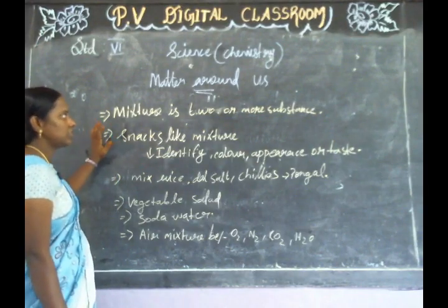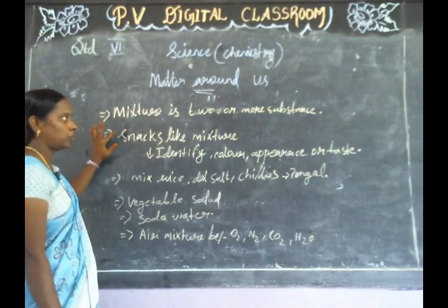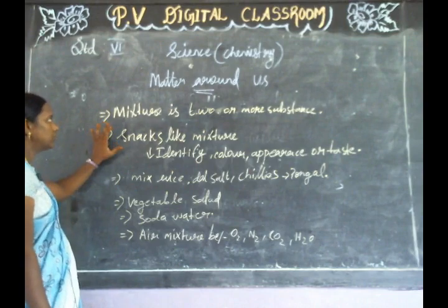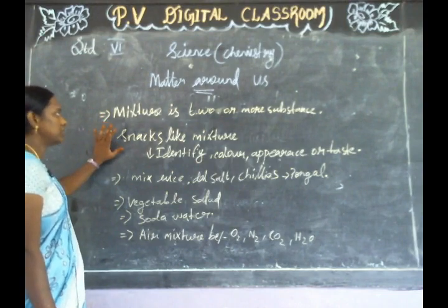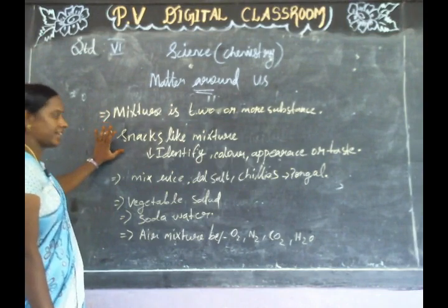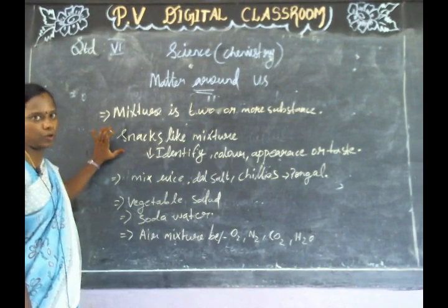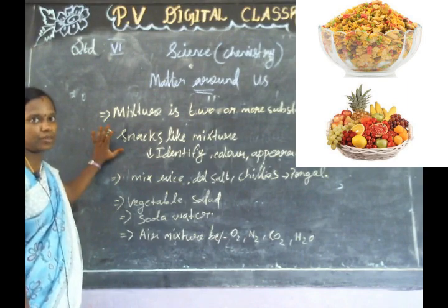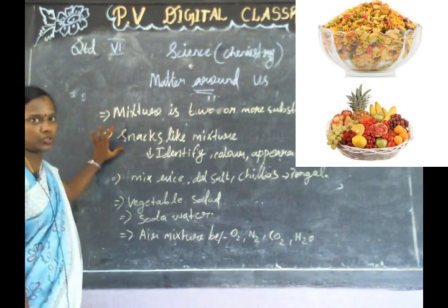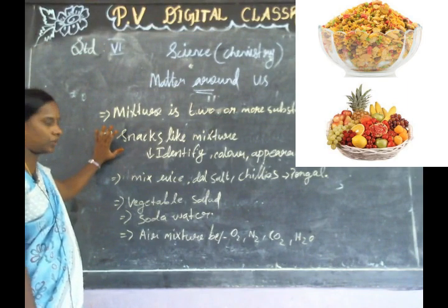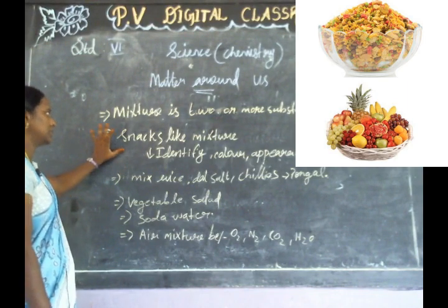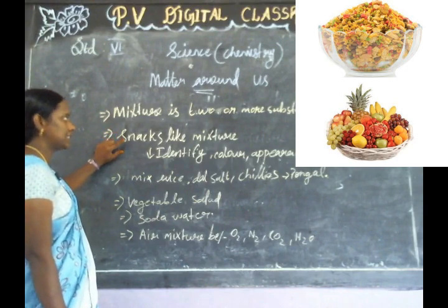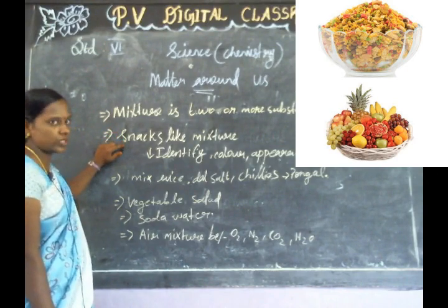Mixture is two or more substances combined. So next page — mixture examples include snacks. That is an example of a mixture. We will try to identify the mixture, compounds and elements. So the first example is snacks — like a mixture.